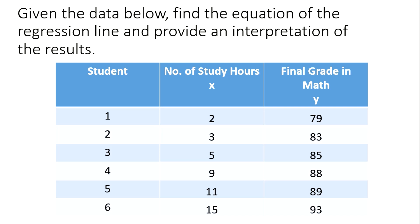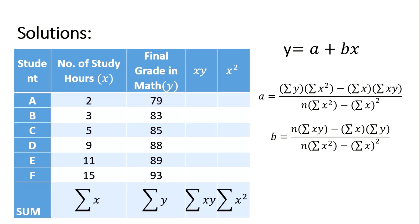The number of study hours for six students is given along with their final grade in mathematics. We need to find a and b. We only need two additional columns: x squared and xy — there is no y squared column needed.